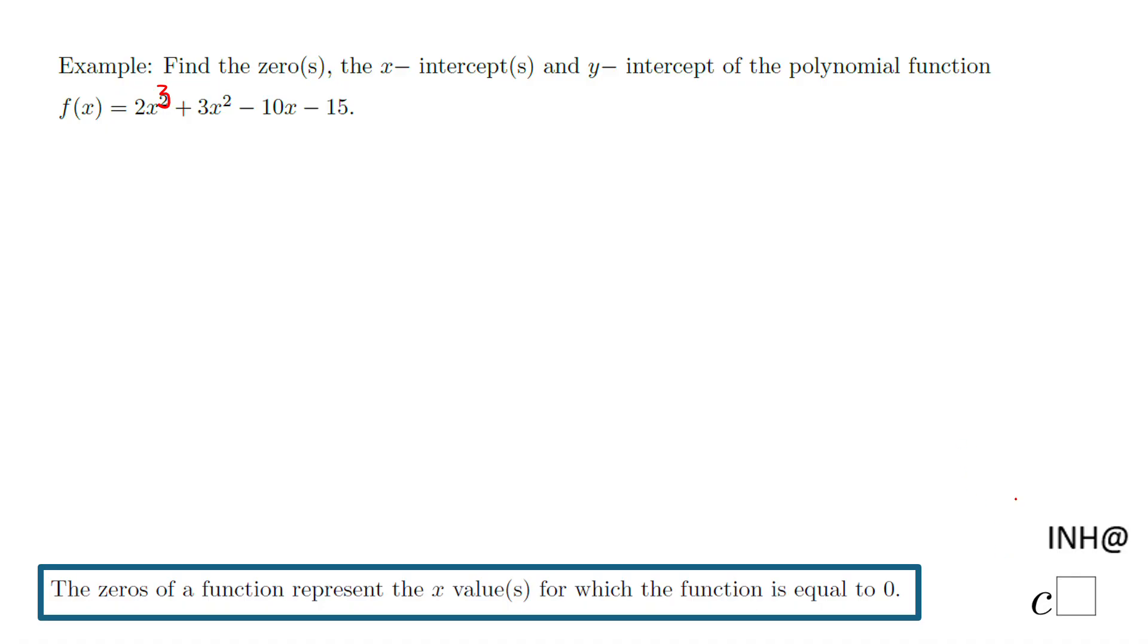I'm going to start with the zeros. The zeros of a function represent the x value for which the function equals zero. In other words, make the function equal to zero and we get this polynomial equation: 0 = 2x³ + 3x² - 10x - 15.